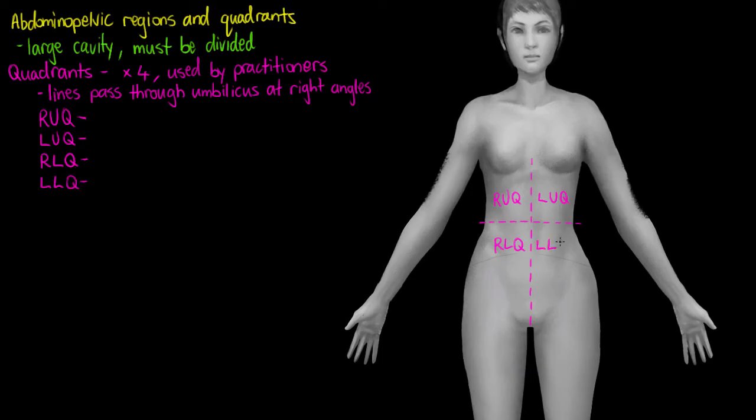And these four subdivisions are going to help us when we're reading a report or something similar. We can take a much more educated guess of where the pain or where the symptoms are coming from when we use these quadrants.